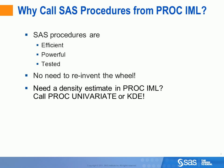Now, why would you want to do this? Briefly, SAS procedures are efficient, powerful, and tested. So if you want to compute a statistic which you know comes from a SAS procedure, why should you reinvent the wheel by writing an algorithm to compute that in IML? Why not just use the statistic that comes directly from the SAS procedure? For example, if you're in PROC IML and you need a density estimate, you could compute it yourself or you could call PROC Univariate.